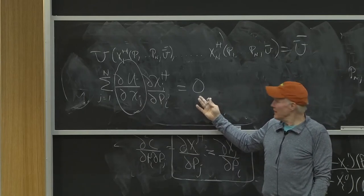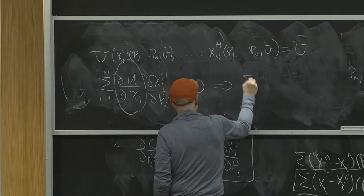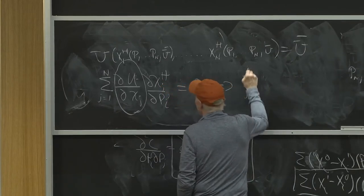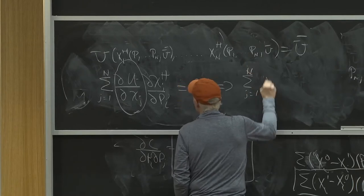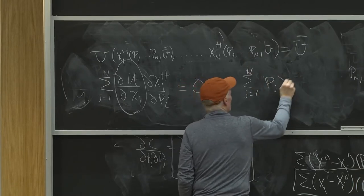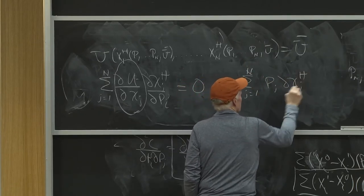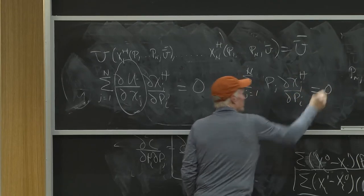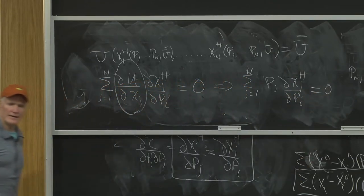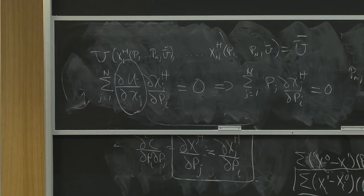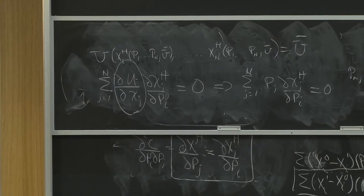This implies the sum from j equals 1 to n of pj partial xjh partial pi equals 0. That is, I can put the pj's where the marginal utilities were.